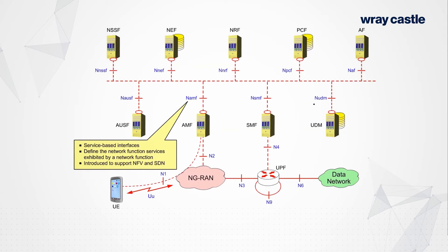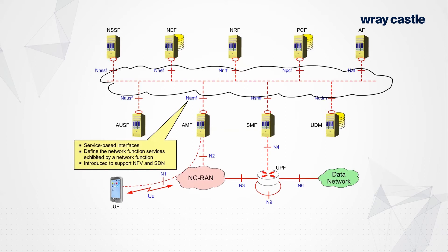You'll also notice that each of these interfaces has names like Namf, Nsmf, and so on — that is effectively the name of the service used to find and retrieve information within this network. Each of these network functions is addressed via IP. Thinking again about how a web browser works: when you click a link, an HTTP request goes off to a web server, and somewhere in the formulation of the message we need to address the server.